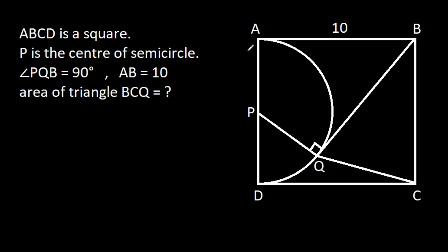In this video, we have been given that ABCD is a square and P is the center of a semicircle, and angle PQB is 90 degrees. AB is 10. We have to find the area of triangle BCQ.